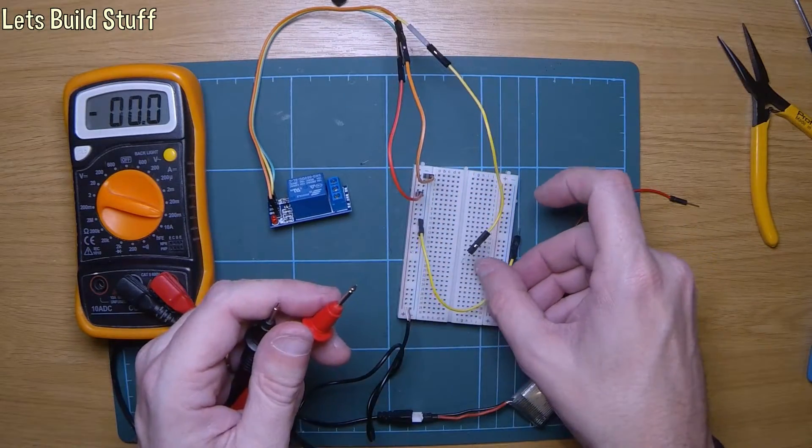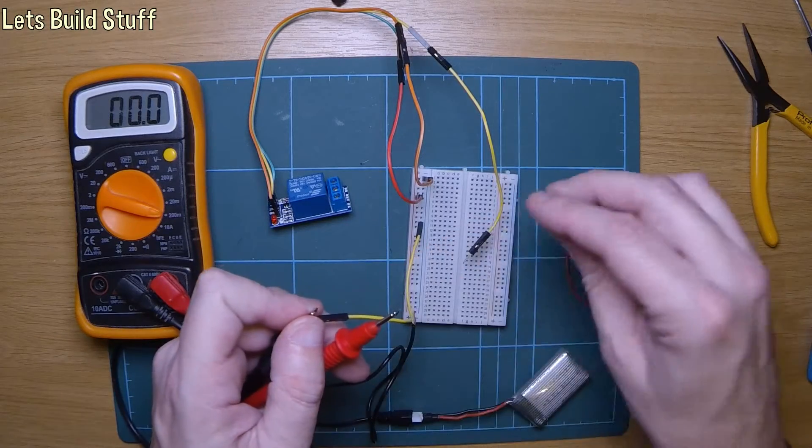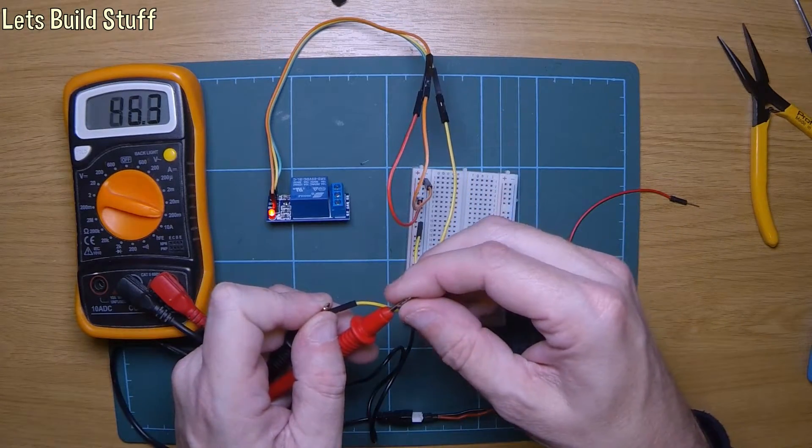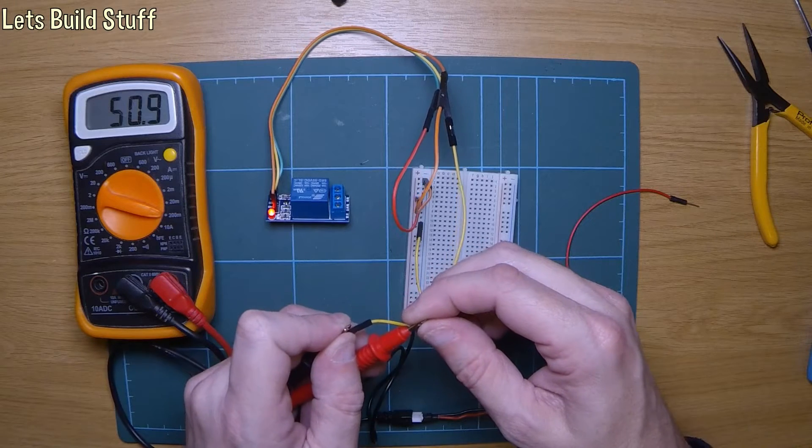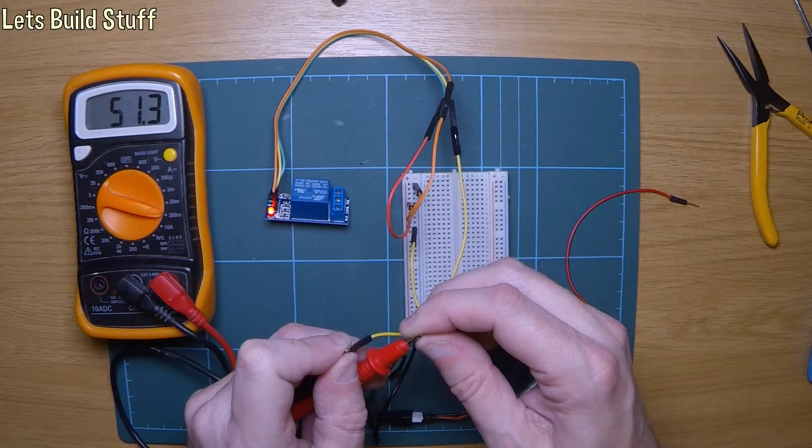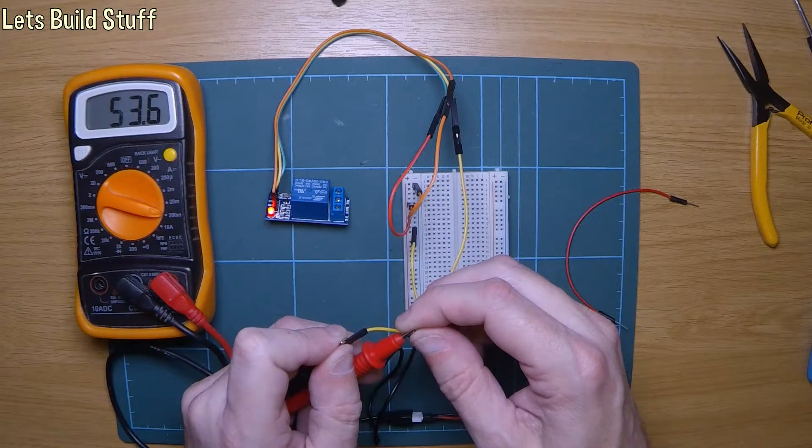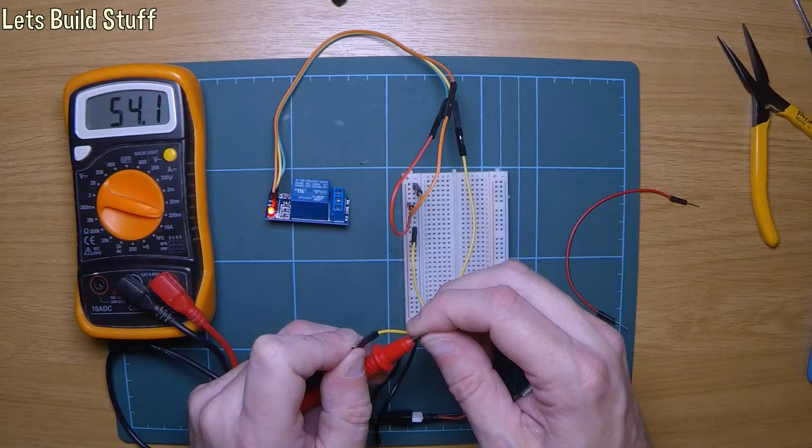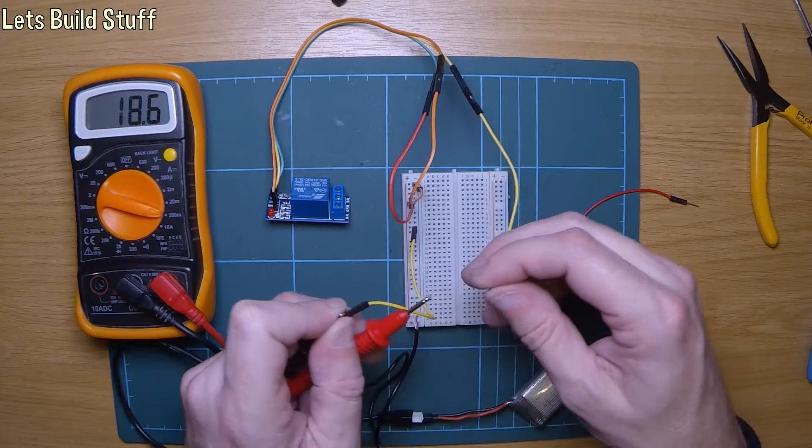So that was minus 50 something. Let's have a look. Yeah, 50. So what's that, 50, yeah, 51 milliamps, 52 milliamps going up, 54 milliamps, 55. So again, this is something.